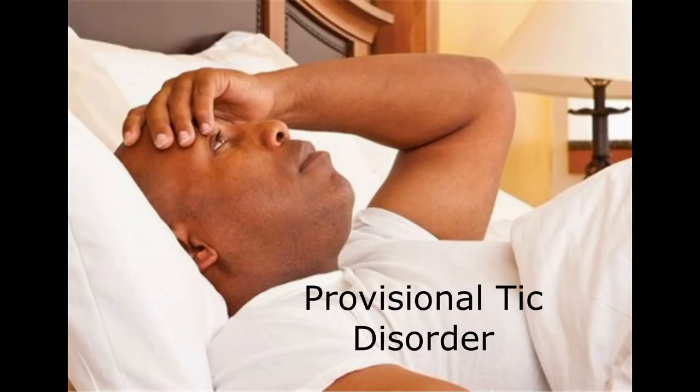With provisional tic disorder, these come with single or multiple motor and/or vocal tics. The tics have to be present for less than a year from when the first tic came about. The onset is before 18 years old, and this cannot be because of a substance or other medical condition. Criteria have never been met for Tourette's disorder or persistent chronic motor or vocal tic disorder.